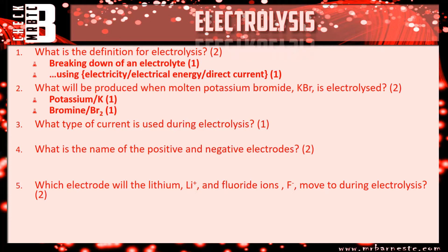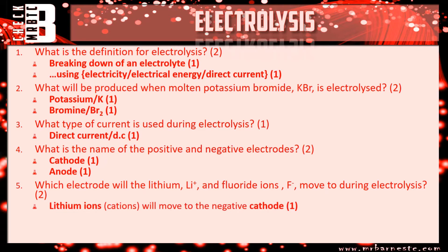Question three: direct current. Question four: the cathode is your negative electrode and the anode is your positive electrode — be specific there. Question five: lithium is positive, it's a cation, so it will go to the cathode — the lithium ions move to the negative cathode. The fluoride ions are a negative anion and will move to the anode, which is your positive electrode.